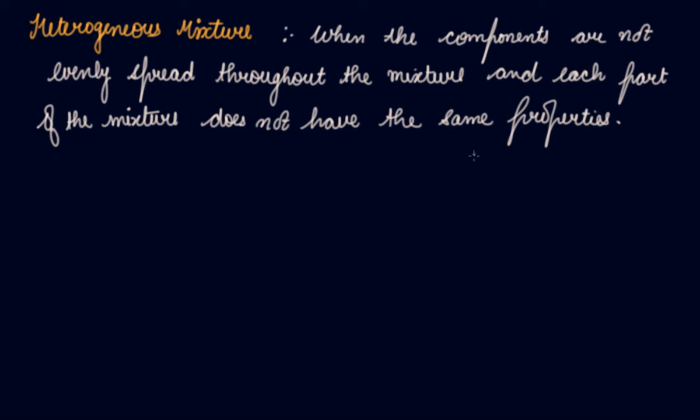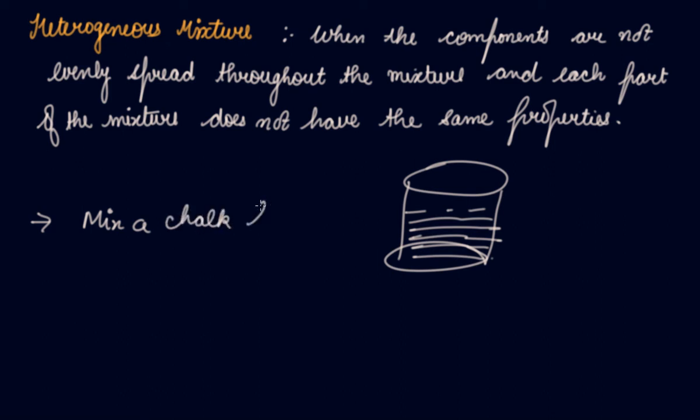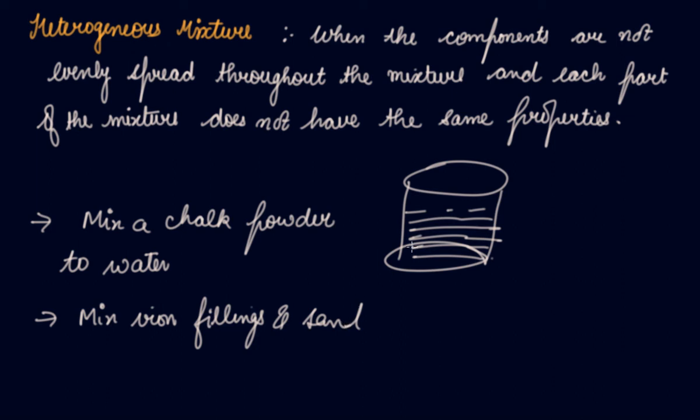Now, if you take chalk powder - if this is water and you add chalk powder to it, you will see that the color of the water has changed and you can see that the water has become dusty. So this is an example of heterogeneous mixture, like mixing chalk powder to water. If you mix iron fillings and sand, then this mixture is also known as heterogeneous mixture.